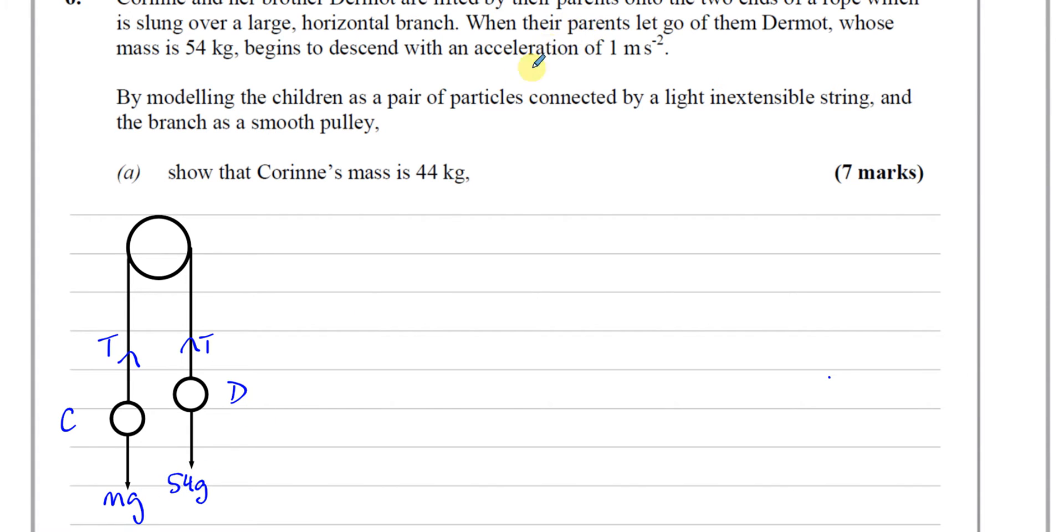Dermot starts to descend going down this way with an acceleration of one meters per second squared. That means Corinne is going to ascend with that same magnitude of acceleration because they're connected by an inextensible string. She is going to ascend at one meters per second squared. Now we have all the forces acting on the particles shown, so I can make a pair of equations.